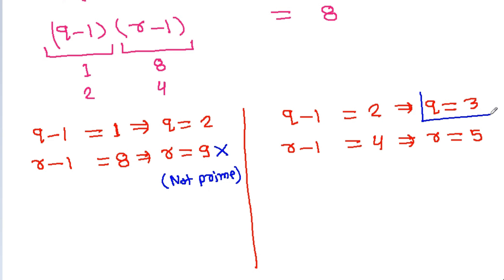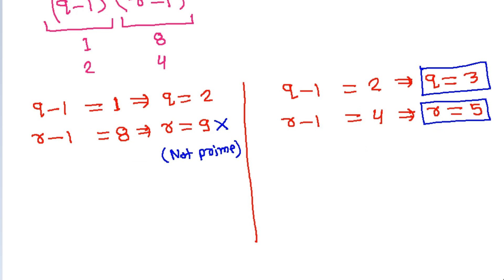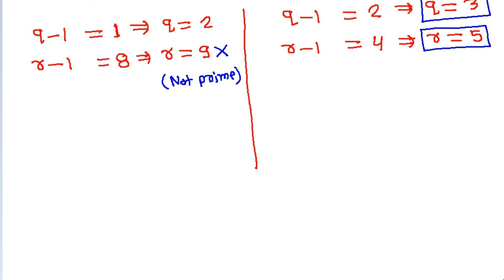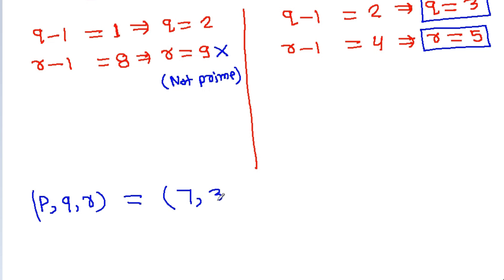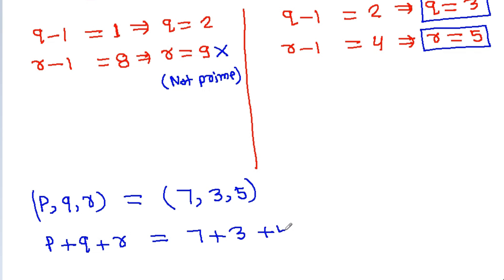So q equals 3 and r equals 5. Therefore p, q, and r are 7, 3, and 5, and p plus q plus r equals 7 plus 3 plus 5, which is 15.